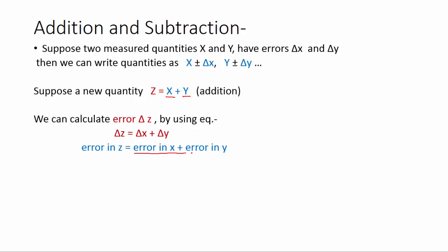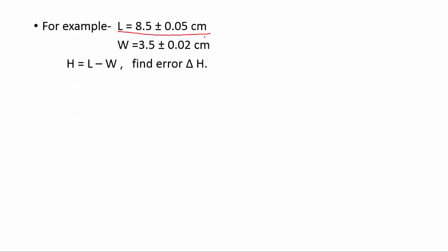So if any new quantity is the addition of x and y, errors would be added too. Same way, if new quantity z is the subtraction of x and y, we have to calculate error in z. Even in that case we will add the error in x and error in y. So we have to add errors in both cases, even in addition and even in subtraction.